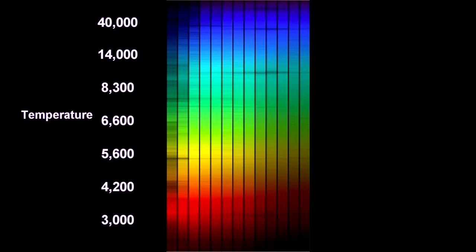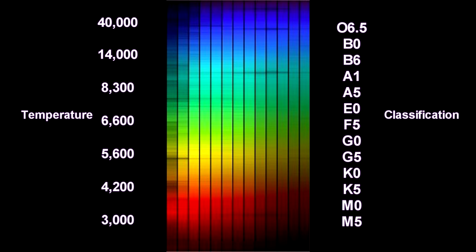When scientists discovered connections between groups of spectral lines and star temperatures, they developed a set of spectral classifications to highlight star content.